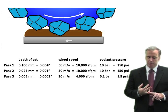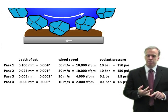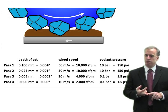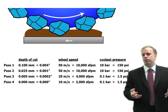Then maybe for the spark out passes, we drop our wheel speed to 10 meters per second or 2,000 surface feet a minute. Now that may seem extremely low. You may think we'll chew up our wheel that way.